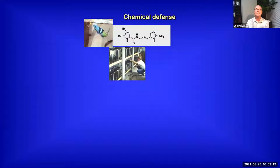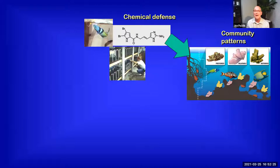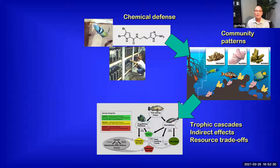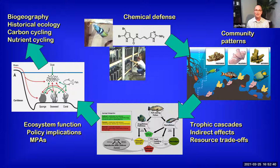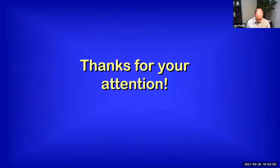I've basically taken you from chemical defense to community patterns of defense, and how that affects the overall ecosystem-level view — trophic cascades, indirect effects, and resource trade-offs. This leads us to ecosystem function, policy implications, marine protected areas, and ultimately to the biogeography of reefs, historical ecology, and carbon and nutrient cycling. With that, I would like to thank you all for your attention. I'm only over by a couple of minutes and I'm happy to answer questions. I would invite you all to turn on your videos when you ask me questions so I can actually see your faces.